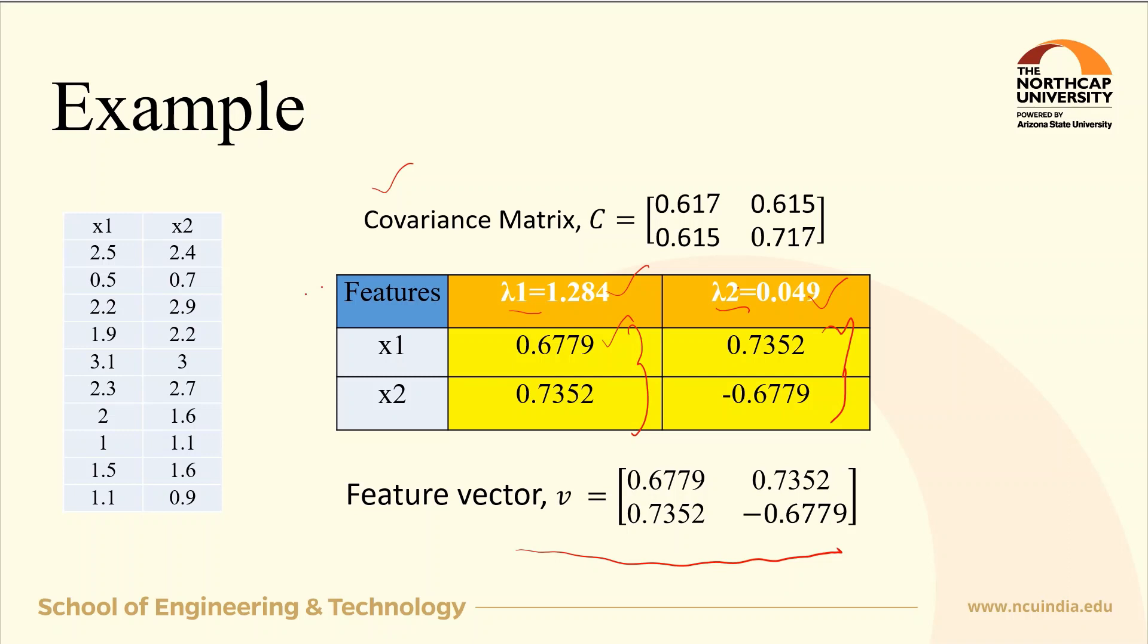One important point to cross check is that the sum of the two eigenvalues, lambda 1 and lambda 2, will give you the same value as the sum of the two diagonal elements: 0.617 plus 0.717, which equals 1.33. You can cross check this after obtaining the eigenvalues.